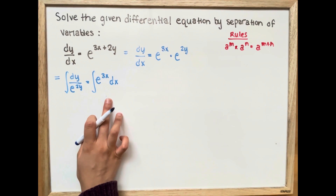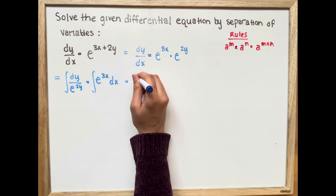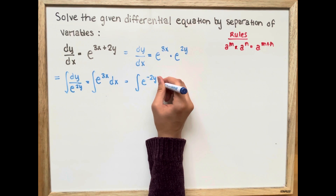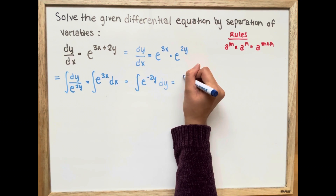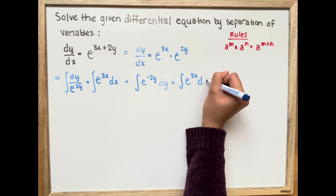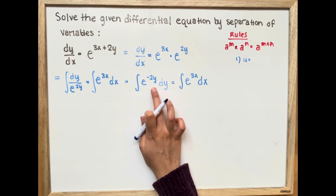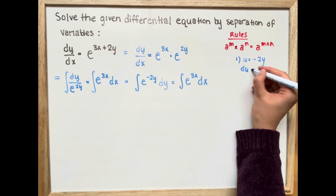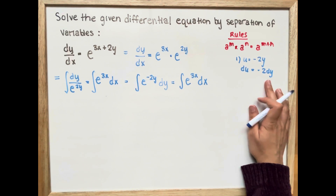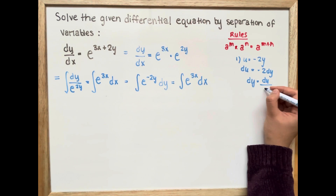In order to solve and simplify this, we're going to move e to the power of 2y to the top, so we're going to have a negative exponent. The first step: we're going to set negative 2y equal to u. Then we take the derivative of u, which is going to be negative 2 dy. Writing this in terms of dy, dy is going to equal du divided by negative 2.